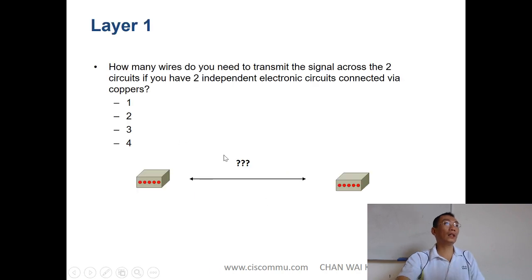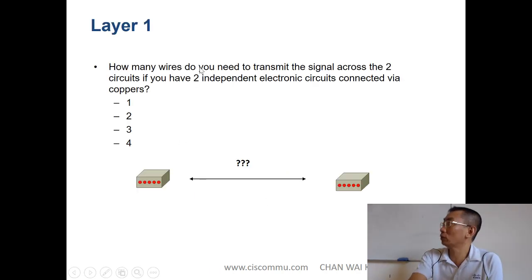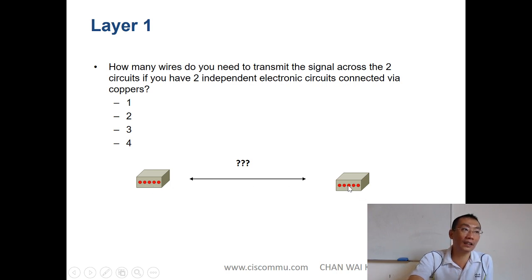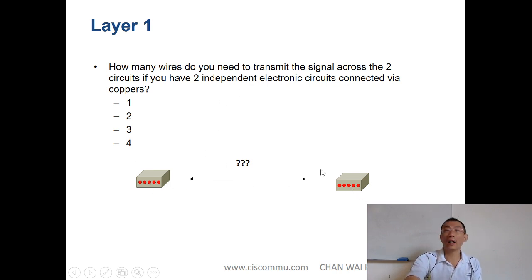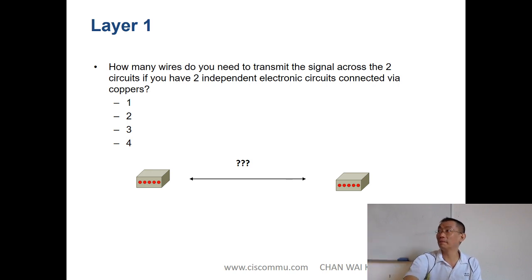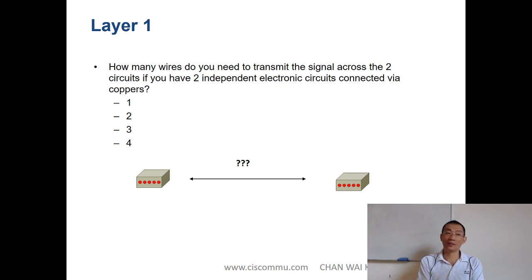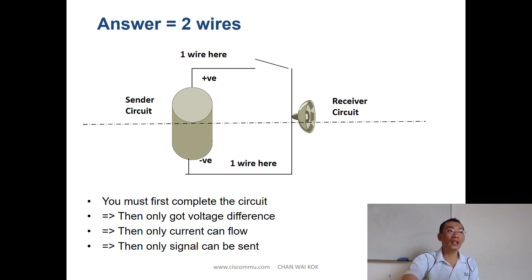In Layer 1, let's say you have two circuits and you're going to connect them using copper. How many wires do you need? Minimum, how many wires do you need? One? No — actually you need two wires.